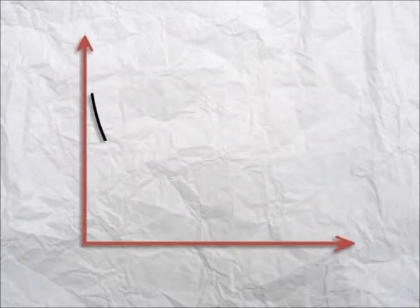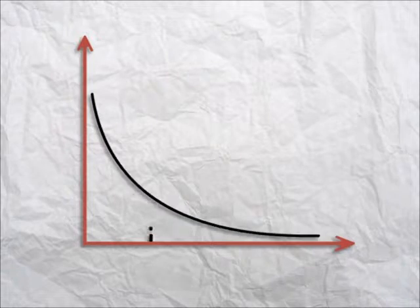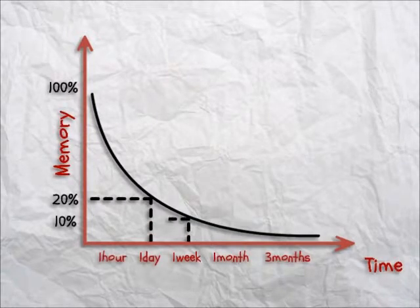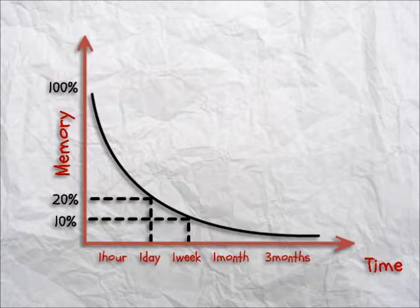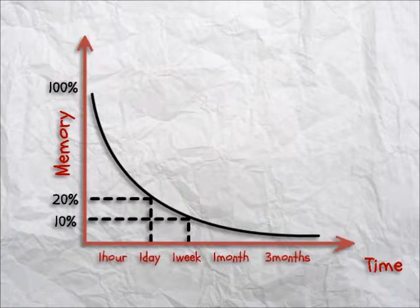The forgetting curve shows us how our memory diminishes over time. This curve shows that we quickly forget most of what we learn. Within one day, you may remember only about 20%. And within one week, you could be down to as little as 10%. It's no wonder students find it so hard to remember everything for their exam.